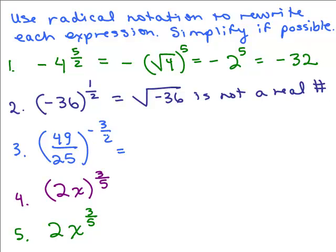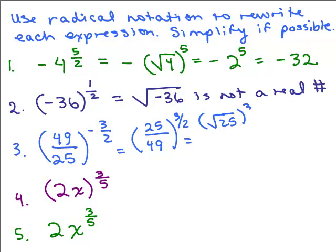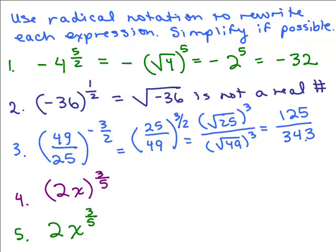Next one: we have a fraction to a negative exponent, so that's the same as the reciprocal to a positive exponent. Now we raise both numerator and denominator to the 3 halves power. I'll use a shortcut — that's the square root of 25 cubed over the square root of 49 cubed. The square root of 25 is 5, and 5 cubed is 125. The square root of 49 is 7, and 7 cubed is 343. So the answer is 125 over 343.